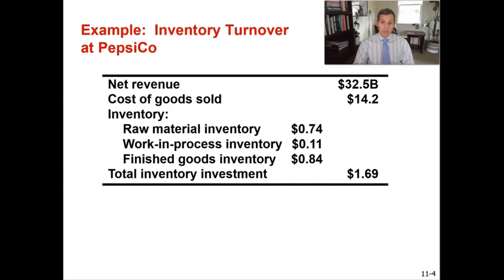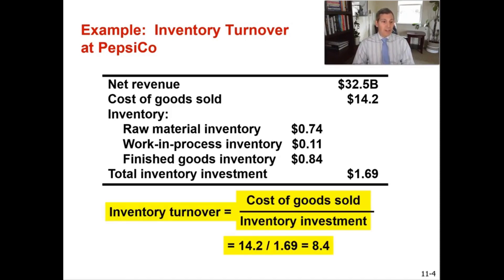To calculate inventory turnover, you simply take your cost of goods sold divided by your inventory investment. For PepsiCo, you take $14.2 billion divided by total inventory investment of $1.69 billion, and that gives you 8.4 inventory turns per year.